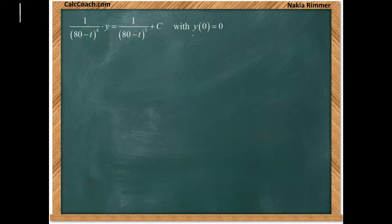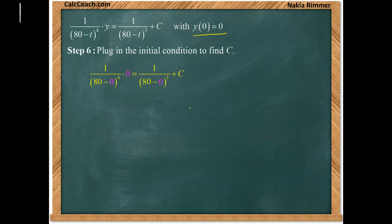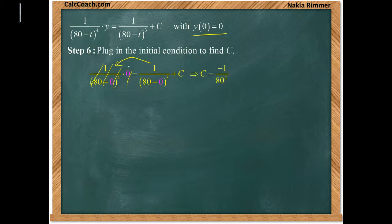Applying the initial condition t = 0, y = 0: the entire left-hand side is zero, so we get 0 = 1/80^3 + C, meaning C = −1/80^3.